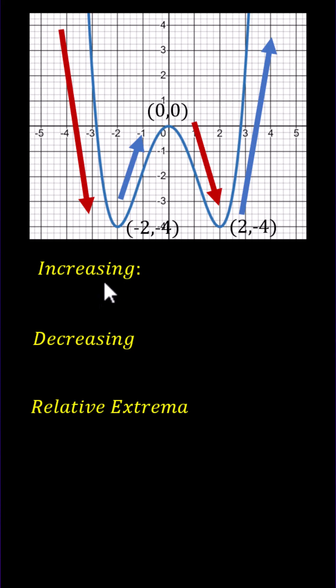To identify the intervals for which the function is increasing or decreasing, we use the x values. Notice the function is increasing from x = -2 to x = 0, and then from x = 2 to infinity. We express this as the open interval (-2, 0) union the open interval (2, ∞).